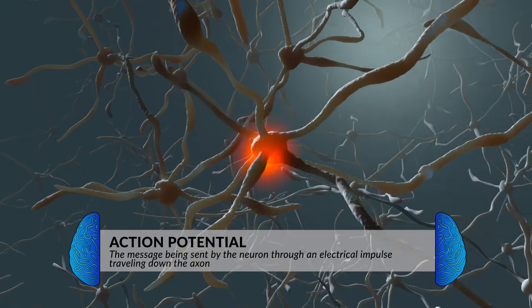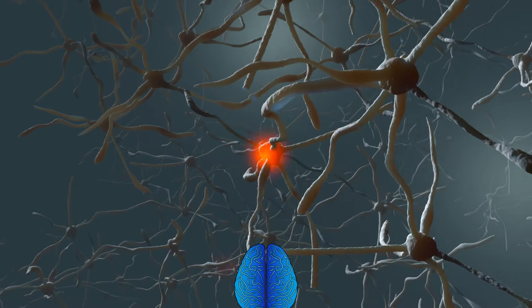An action potential is when a neuron fires an impulse down the axon. Think about your neuron like a battery. This battery has both a positive end and a negative end. Right now, this battery has the potential to release energy, but it can't do that unless there's a connection made between the two ends. A neuron is similar.